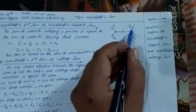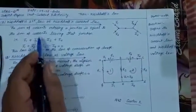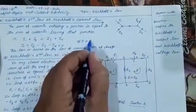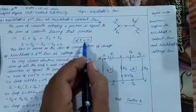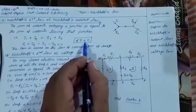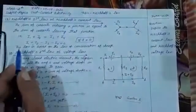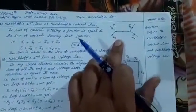The current entering the junction is I1 and I2, and the current leaving is I3 and I4. If we take I3 and I4 to the other side they become negative, giving us: the algebraic sum of all currents across a junction is always equal to zero. This law is based on the law of conservation of charge — the charge entering a circuit equals the charge leaving it.